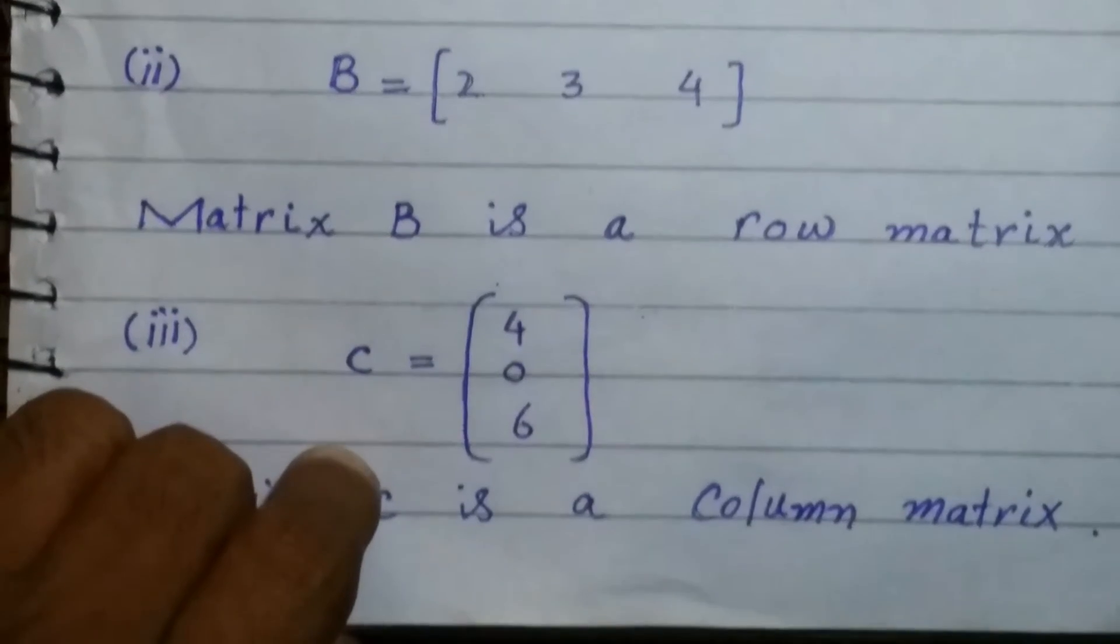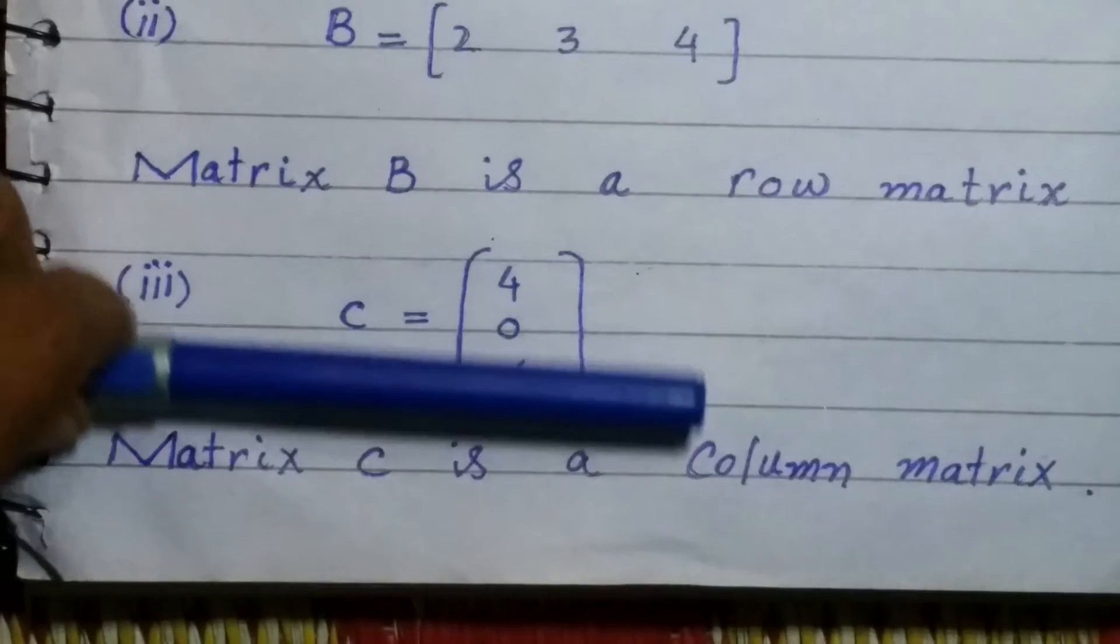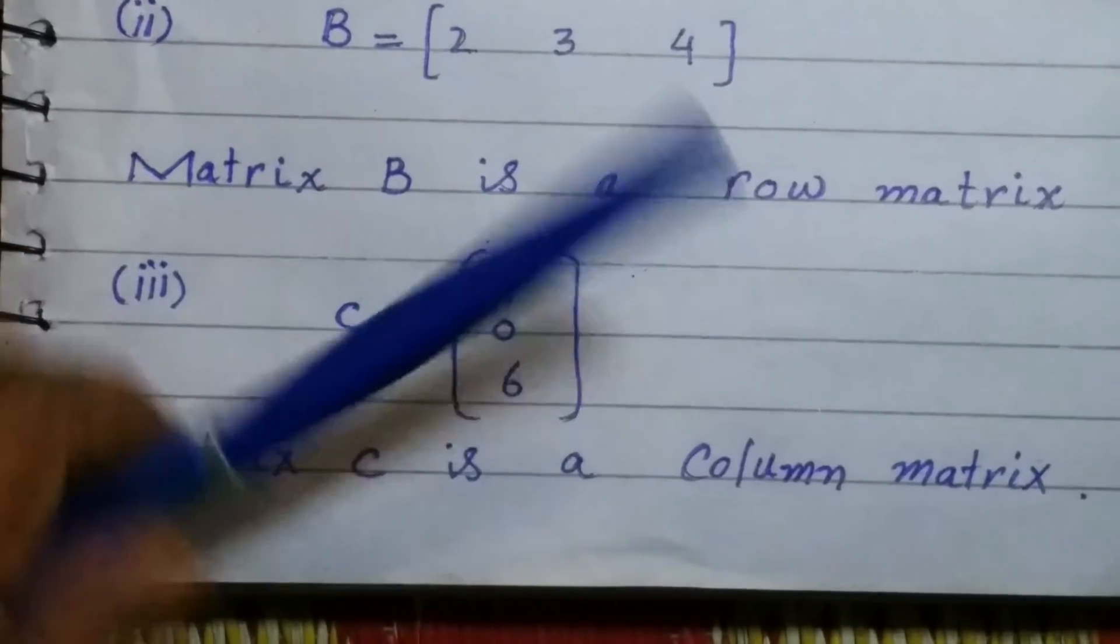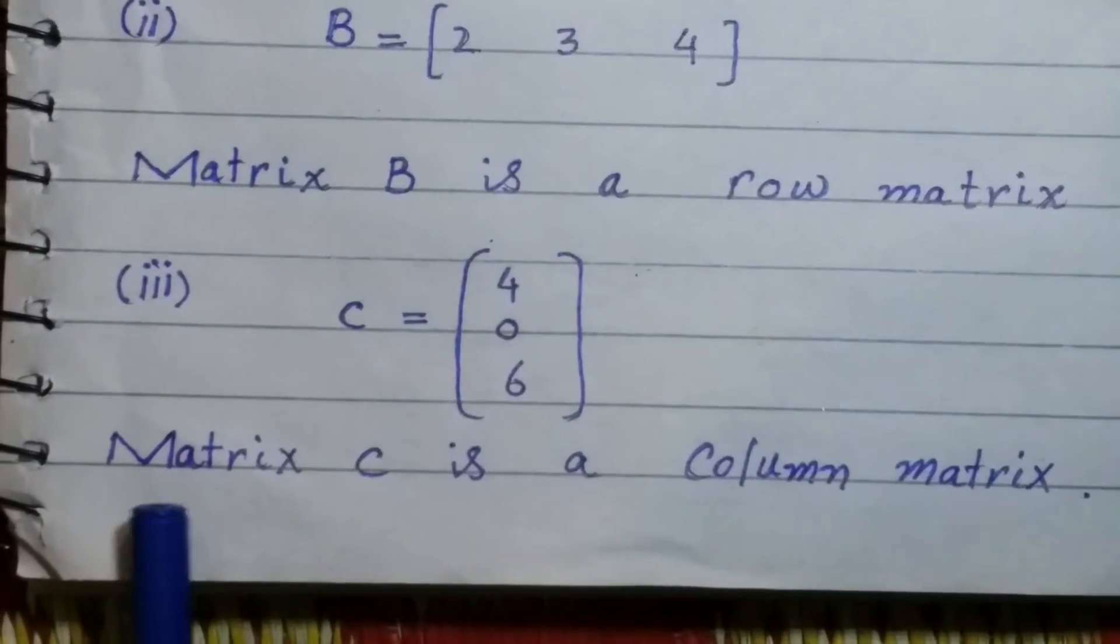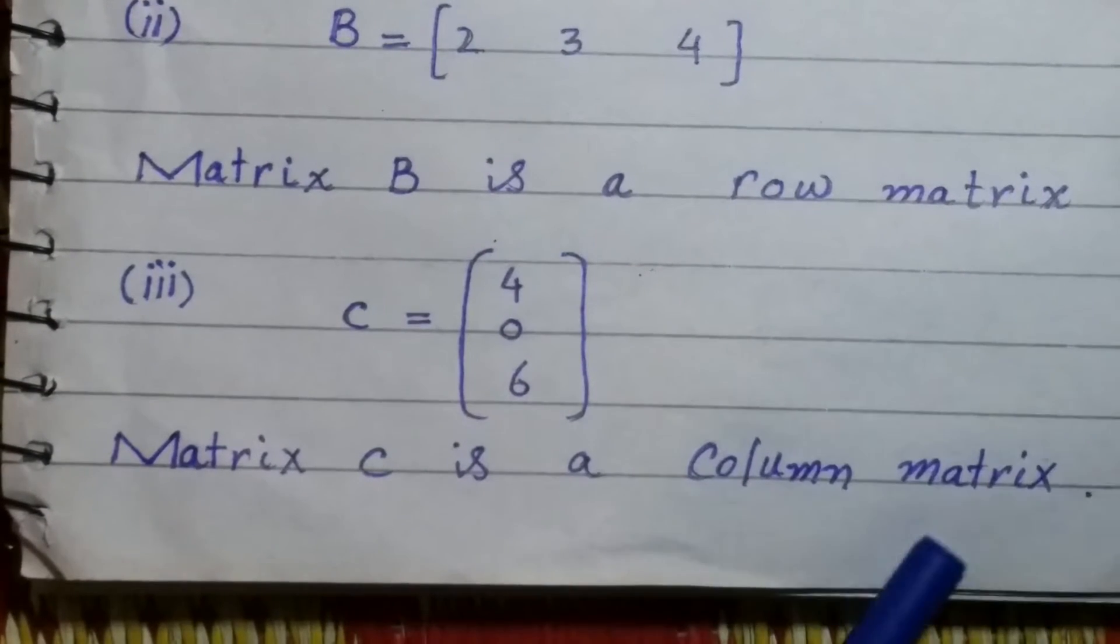Now let's move to C. Matrix C has only one column but three rows. It has three rows but only one column, so we can say that it is a column matrix.